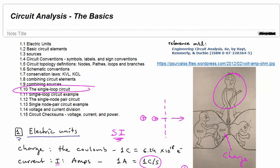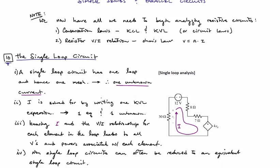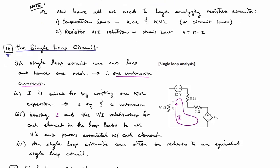We now want to look at single loop circuits. We first note that at this point, we have everything we need to begin analyzing resistive circuits.